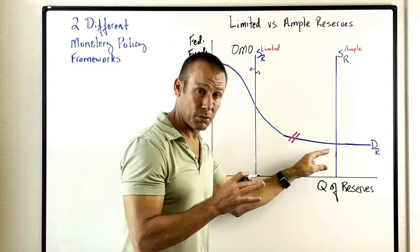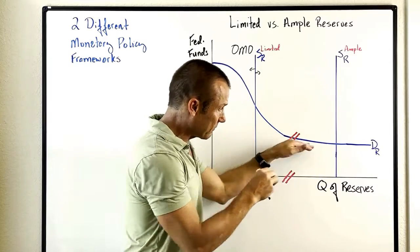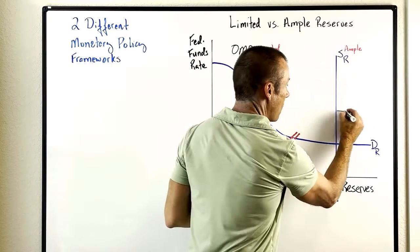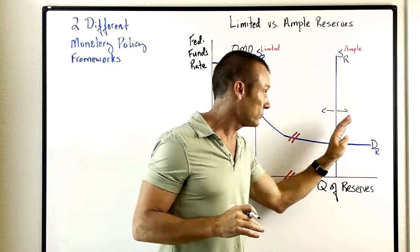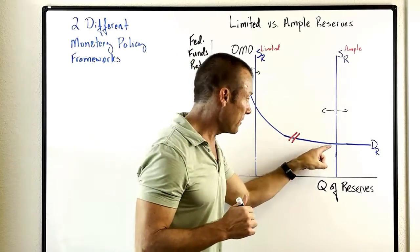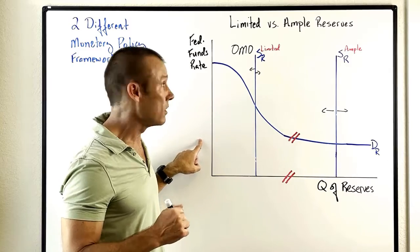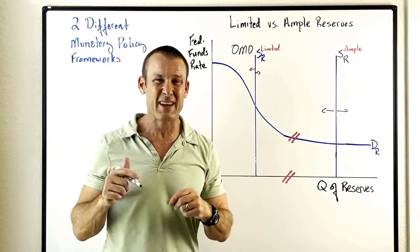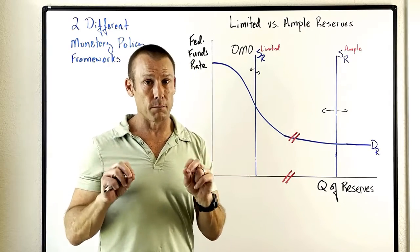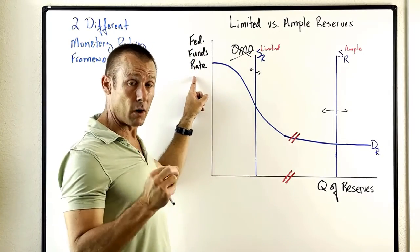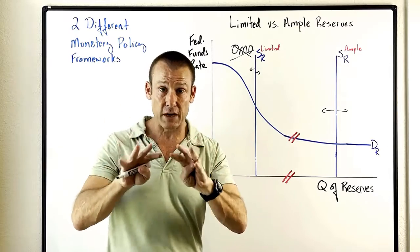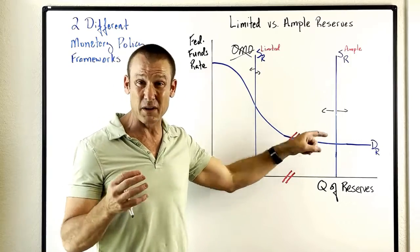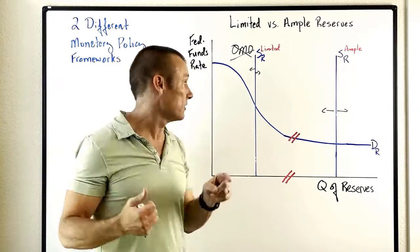Open market operations are no longer very effective at changing the federal funds rate. Because the supply curve intersects the flat part of the demand curve, open market purchases or sales that shift the supply of reserves don't have much effect at all on the federal funds rate anymore. So OMO — the thing taught in school and used as the number one policy tool of the Fed — is still a policy tool, but it is no longer number one, because it does not change this benchmark interest rate the Fed targets.